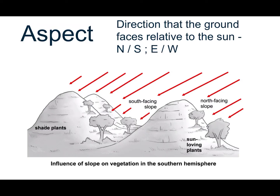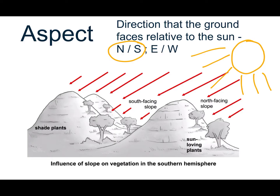The next thing that we're going to look at is aspect. Aspect has got to do with the direction that the ground faces relative to the sun. The most important one we're going to look at is the influence of whether we have a north-facing or a south-facing slope. So in the southern hemisphere, the sun comes in at an angle because we are below the equator. Because of that, your north-facing slopes get quite a lot of sun, but your south-facing slopes are in the shade, and that's obviously going to affect the temperature.